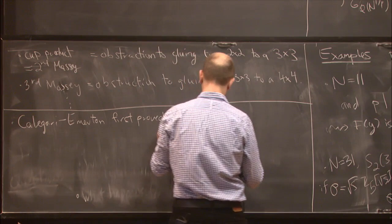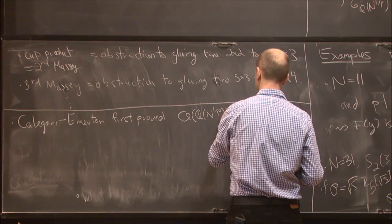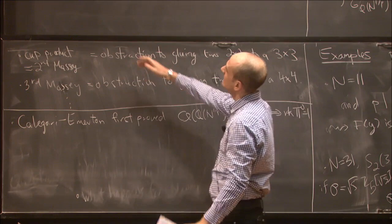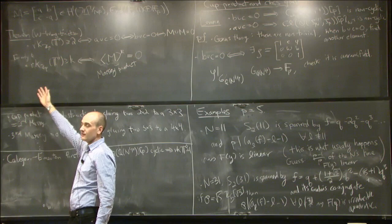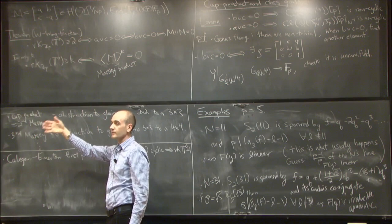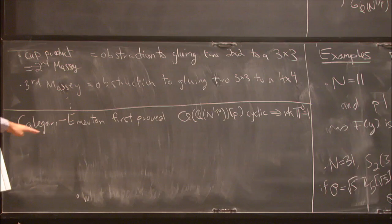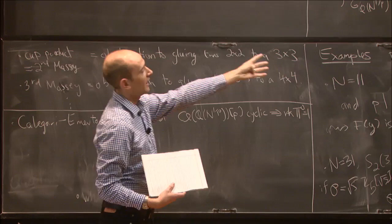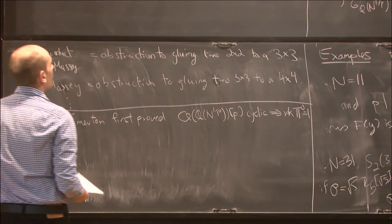Combining this lemma with the theorem, you get a result about the rank of the Hecke algebra being related to the class group. This was the result of Calegari-Emerton. Regarding the definition of the k-th Massey product: if you assume that the rank is at least k minus 1, then the k-th Massey power is defined, and it is 0 if and only if the rank is one bigger. So it's an inductive condition. Calegari-Emerton first proved this result, which is a corollary of the theorem and the lemma, but we also get another corollary about this other type of class group being related to the rank.